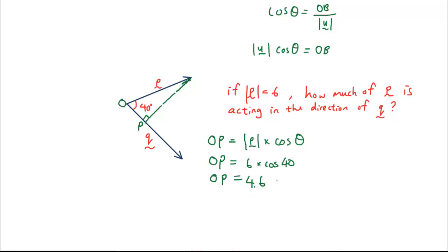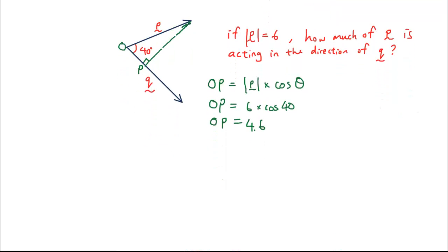Now, the keyword that I have been withholding from you guys, because I didn't want you guys to get confused. This length here, how much of p is acting in the direction of q, the keyword for that is scalar resolute. That's the scalar resolute of p on q. So if you ever see a problem asking for the scalar resolute of one vector on another vector, that's what it means.